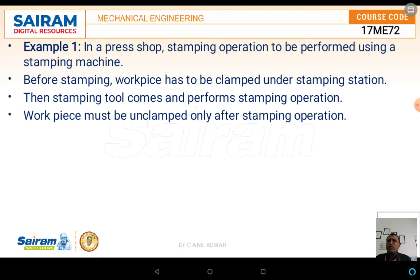Before stamping, the work piece has to be clamped under the stamping station. Then the stamping tool comes and performs the stamping operation. The work piece must be unclamped only after the stamping operation is complete. The major process parameter here is the stamping operation. For this, the work piece has to be clamped and unclamped using one actuator, while the stamping is done by means of another actuator.